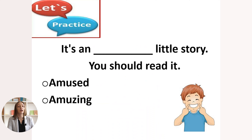Another example: 'It's an amused or amusing little story — you should read it.' Think: is this the present or the past participle? Ready? It's 'an amusing little story' — we say amusing because we describe the little story.